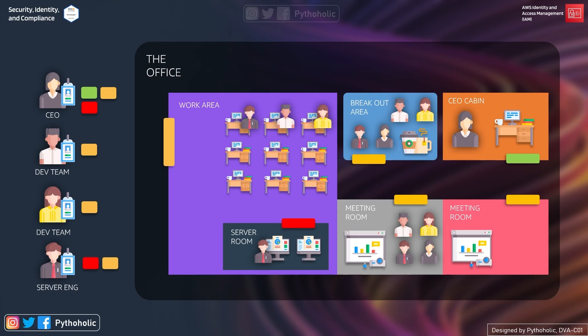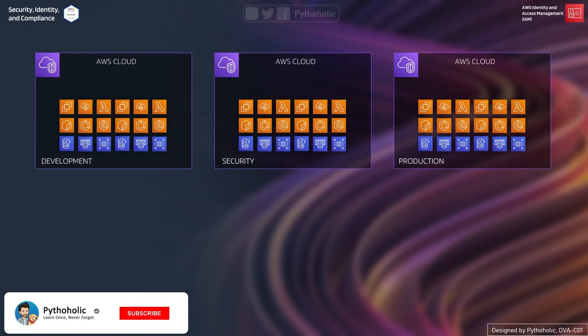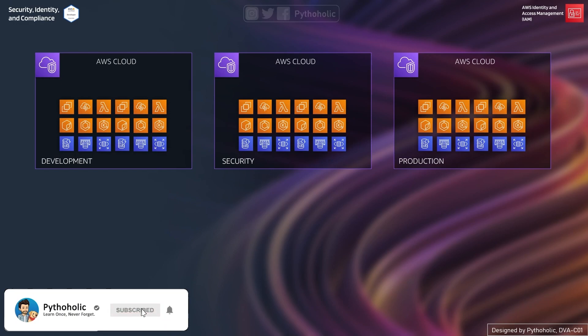We are restricting access by adding a particular condition, and that is access control. Access control is a selective restriction of access to a place or other resources. You need to think about how you can provide access control to the resources you have — that's the same reason why we have separation of duties and separation of business units.